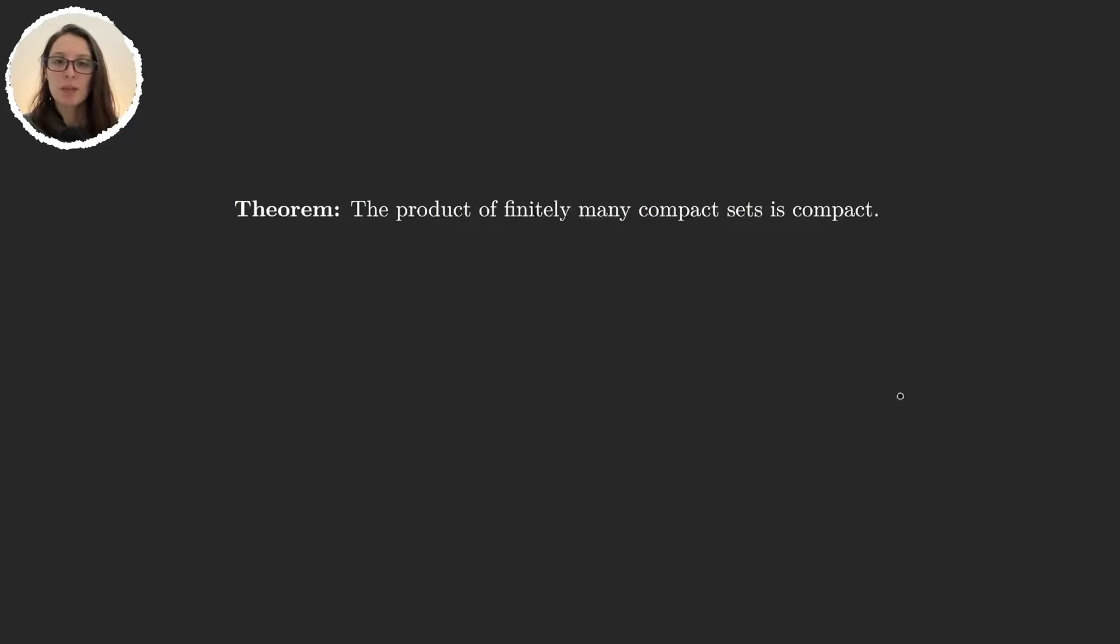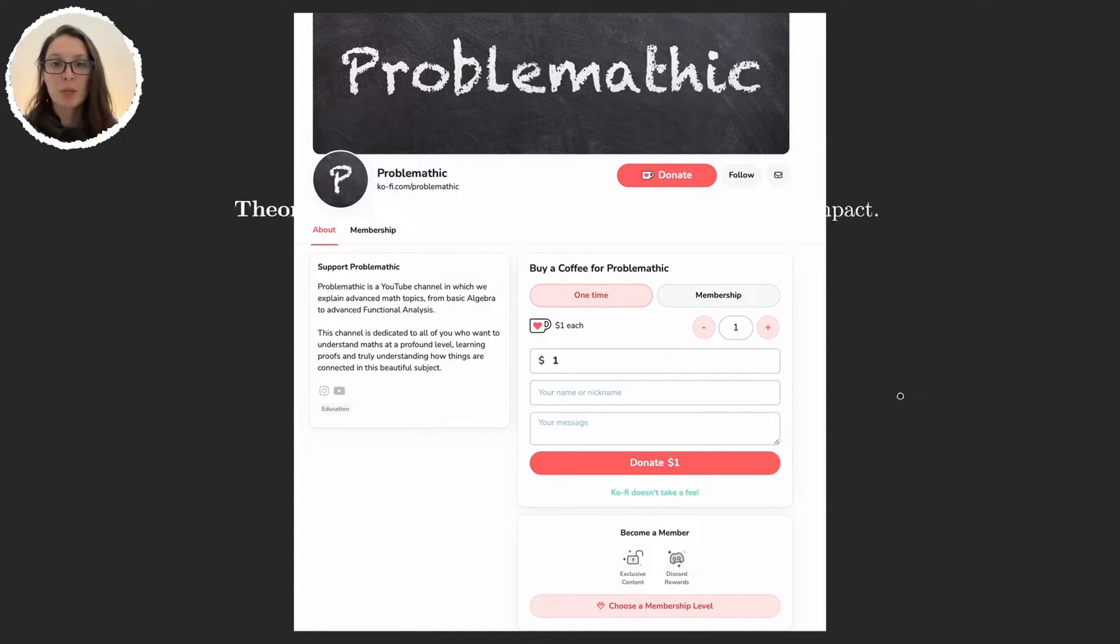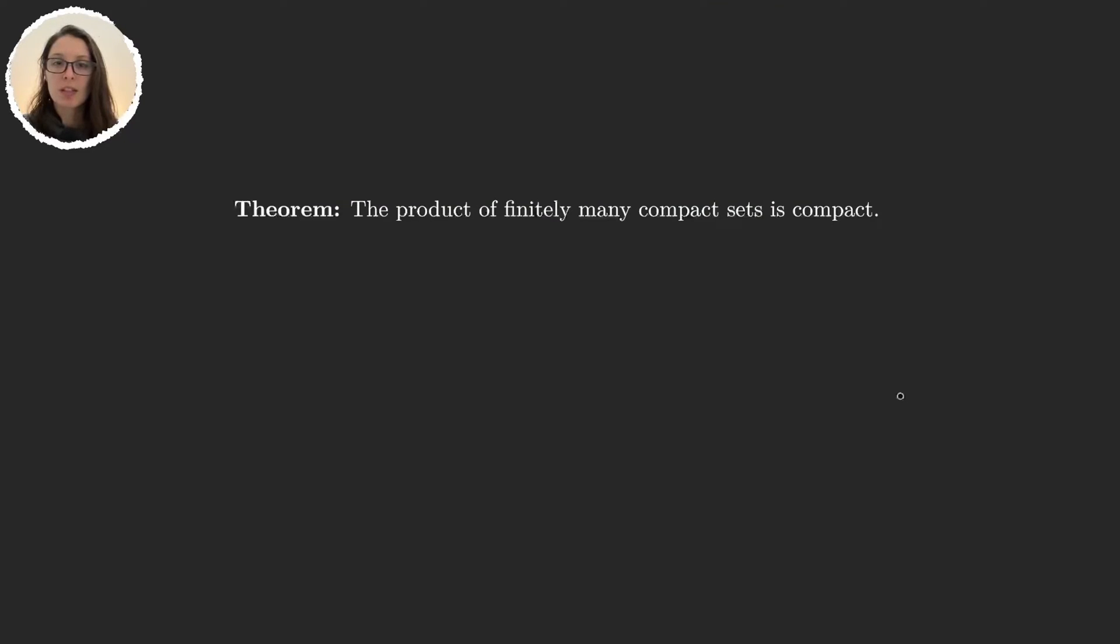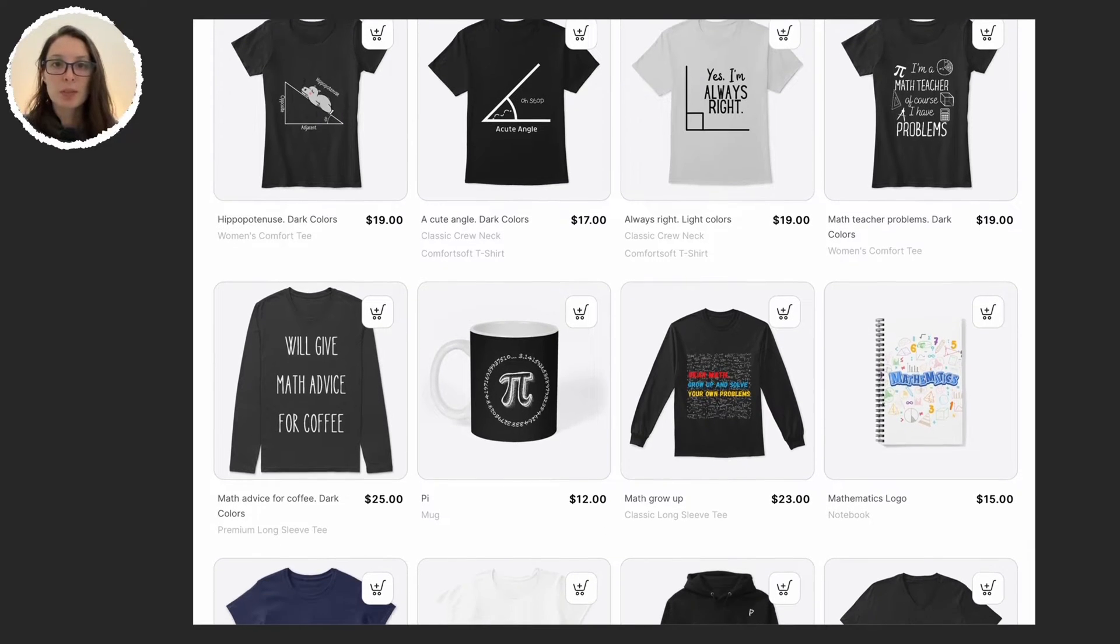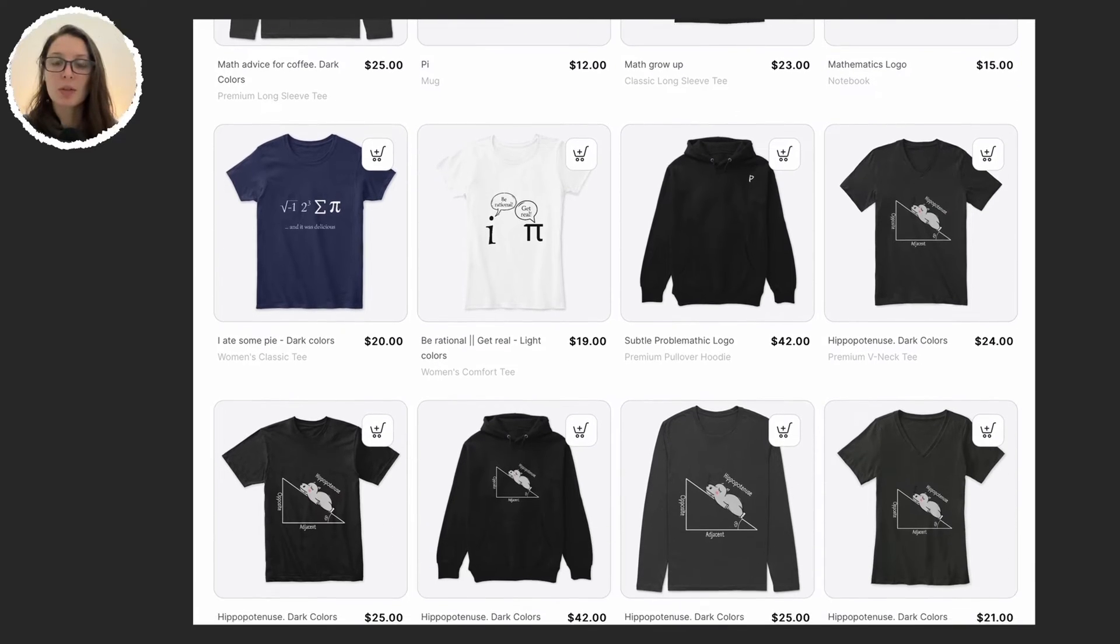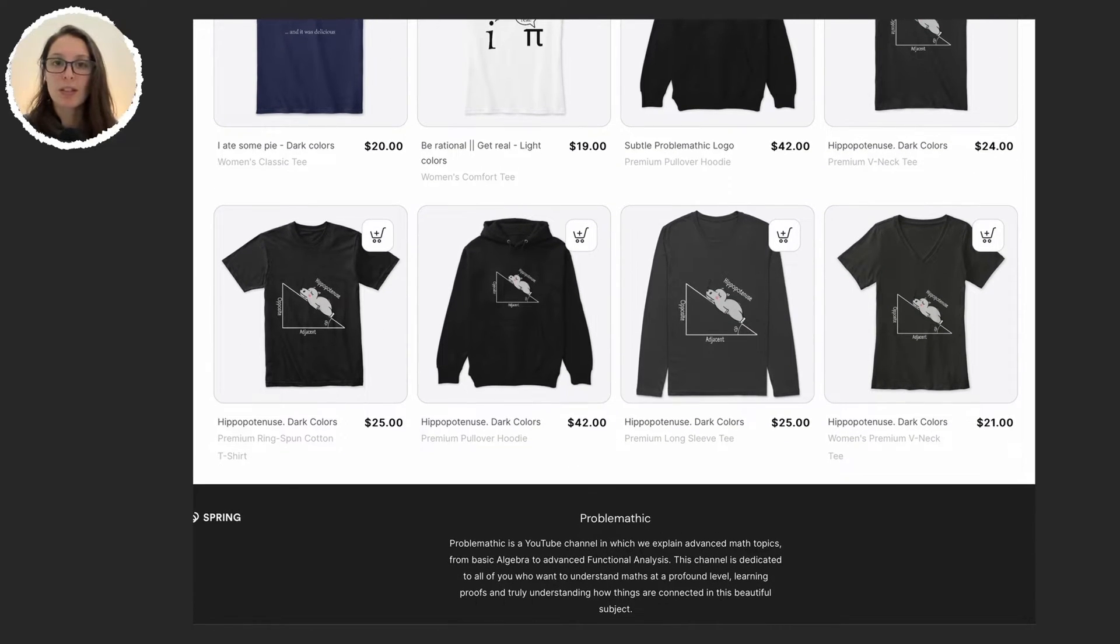Before starting with the proof let me remind you that if you want to support the channel you can do so in many different ways. You can donate a small amount or become a member on Ko-fi. If you become a member you get exclusive access to content. If in addition to that content you also want to get merchandise then you can shop on Patreon where monthly subscribers get stickers, mugs, t-shirts and more. But if the mathematics merch is all you want then you can check out our store where we sell all the items.